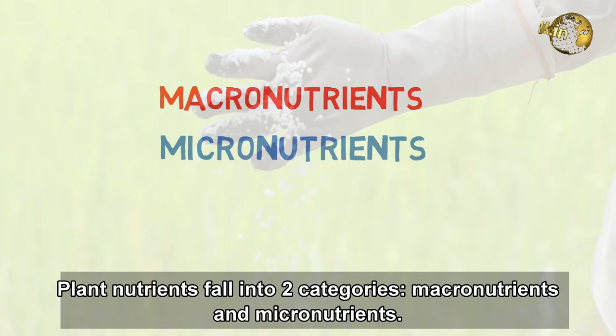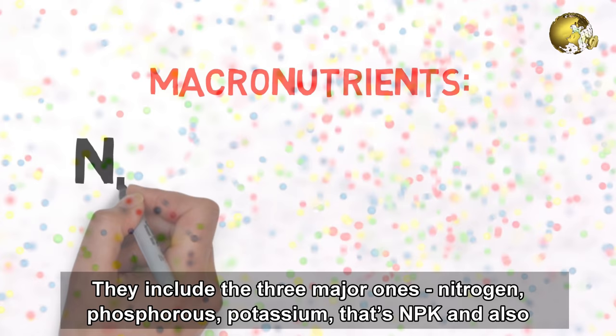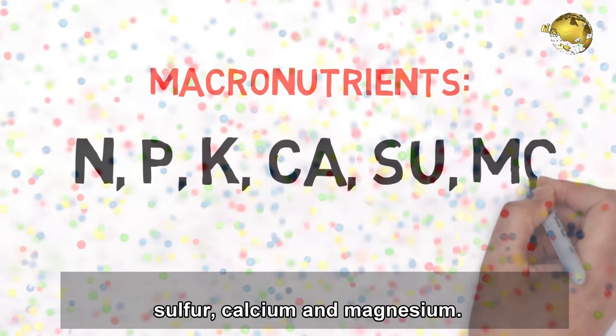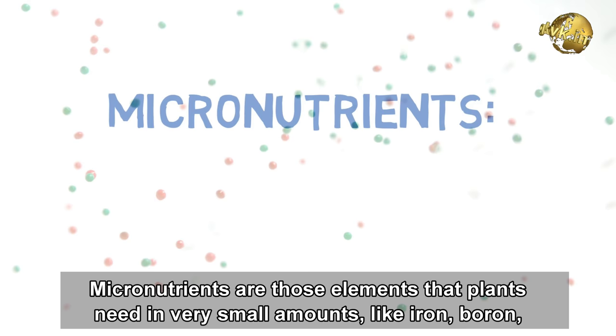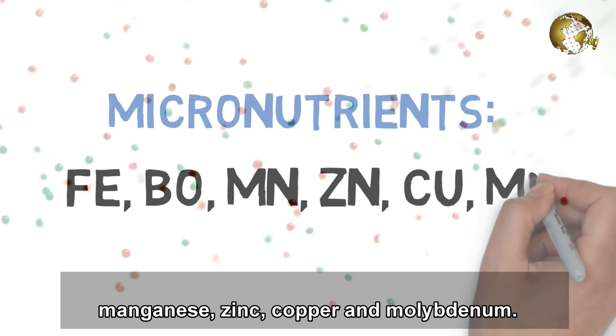Macronutrients are those elements that are needed in relatively larger amounts. They include the three major ones — Nitrogen, Phosphorus, and Potassium (NPK) — and also Sulphur, Calcium, and Magnesium. Micronutrients are those elements that plants need in very small amounts, like Iron, Boron, Manganese, Zinc, Copper, Molybdenum, etc.